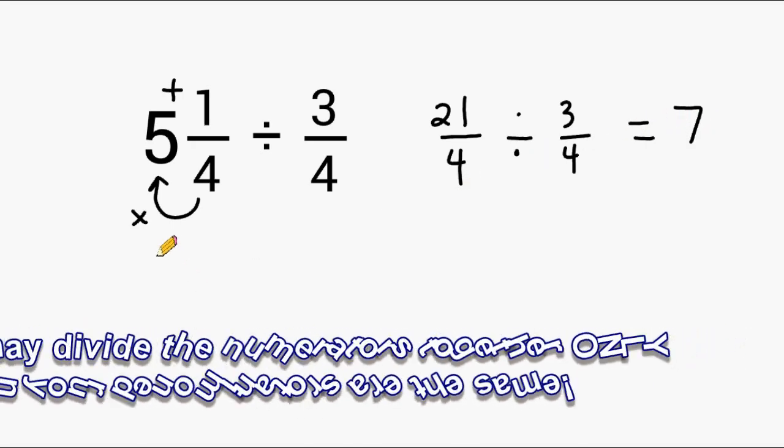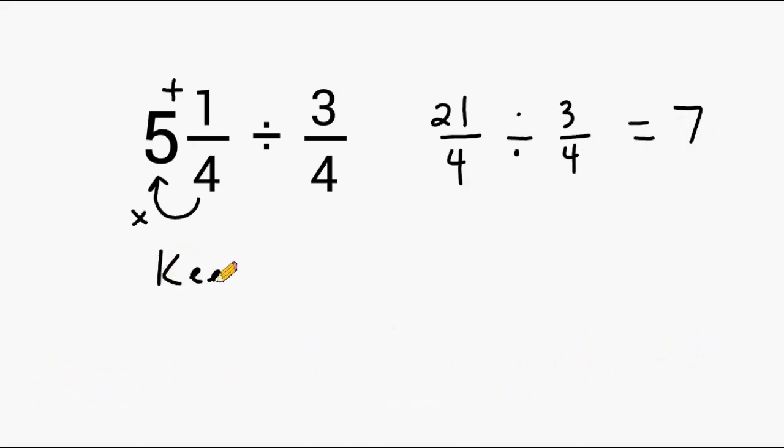However, you are probably used to your teachers telling you to show your work and they say keep, change, and flip. What they are referring to is you have to take your first fraction which in this case is 21 over 4 and keep it exactly as it is. Then you change your division sign into a multiplication sign and you take the last fraction, the fraction you are dividing by, and flip it.